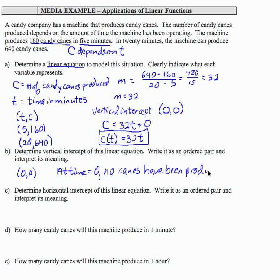If I want the horizontal intercept, well, that's the same ordered pair. We're just looking at when is the output 0 when the input is 0. So here we would say when no canes are made, no time has passed. So it's kind of the reverse situation.